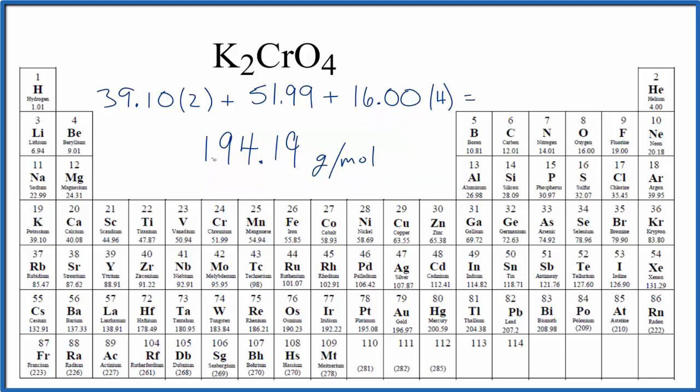What that means is if we have 194.19 grams of this potassium chromate, that's going to be exactly one mole. If we had one mole, the mass would be 194.19 grams. That's the molar mass.